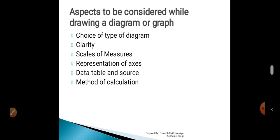Next, we are going to see about the different aspects to be considered while drawing a diagram or graph. Whenever we are presenting any information with the help of any diagram or graph, there are certain things to keep in mind. First is the choice of type of diagram — that is, what type of diagram you are selecting to present your data. The right type of diagram or graph must be chosen to make the picture more effective. Certain data can be presented in a bar diagram, while some requires a pie chart. As a user, we must make the right choice to make our data more effective.